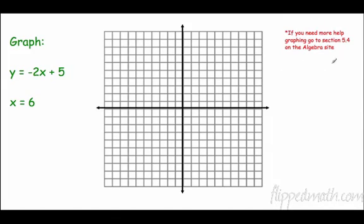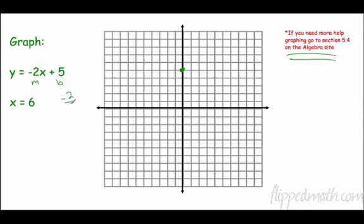There are more descriptive videos on the algebra site if you need extra help. y equals mx plus b: my b is 5, so I start at 5 on the y-axis. My m is negative 2 over 1, so I go down 2 over 1, down 2 over 1 — there's my line. I try to make three points to keep it straight. For x equals 6: I go to x equals 6 — one, two, three, four, five, six — and x is always 6, never anything else. That's an undefined, vertical line at x equals 6.